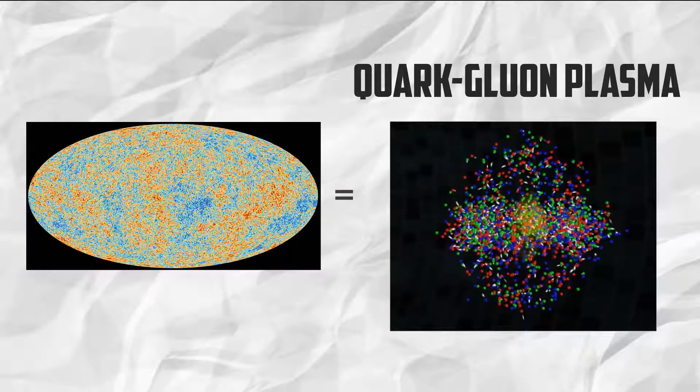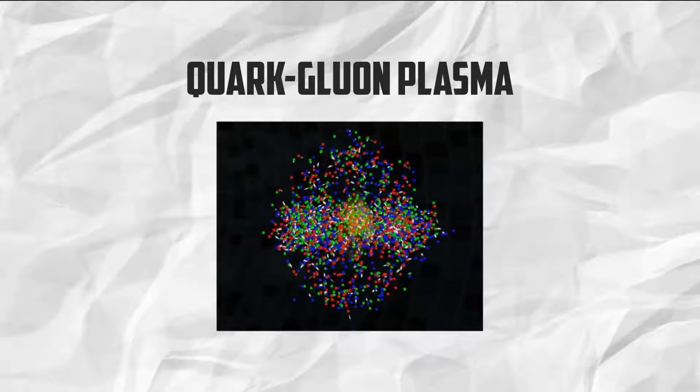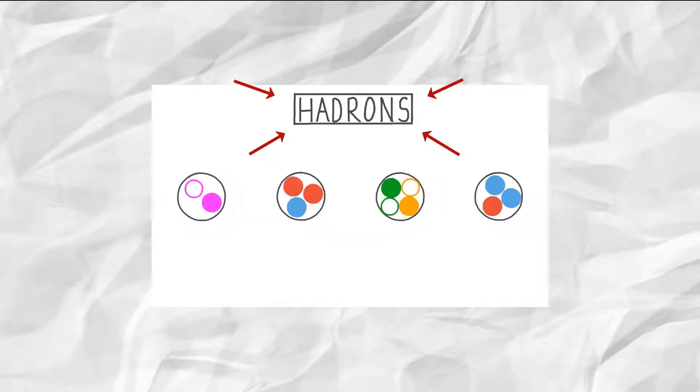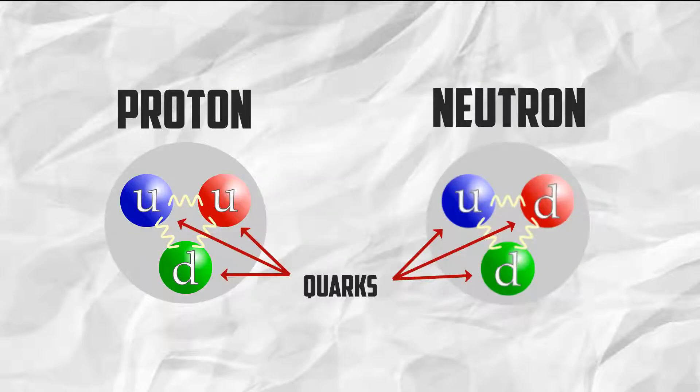Right now, the universe is just a soup of a bunch of particles. In the first millionth of a second, this soup was a continuous cycle of creation, annihilation, and recreation of these particles. In the first seconds of the universe, it was cold enough for hadrons to be created, which then resulted into protons and neutrons.